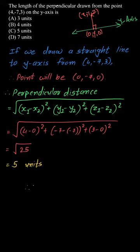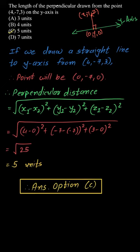This equals 5 units. Hence, option C, which states the length of the perpendicular is 5 units, is the correct choice.